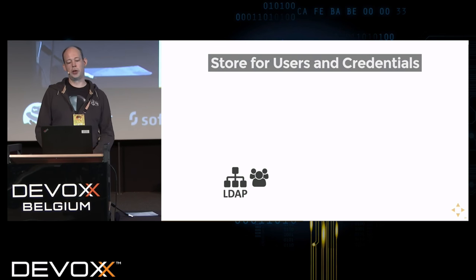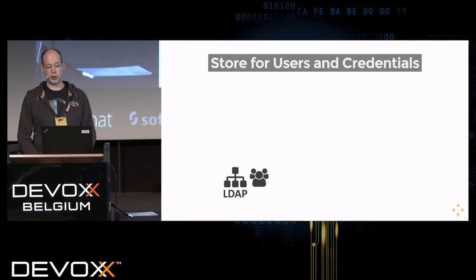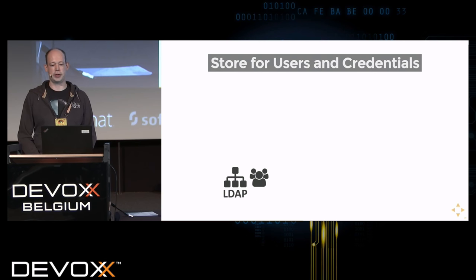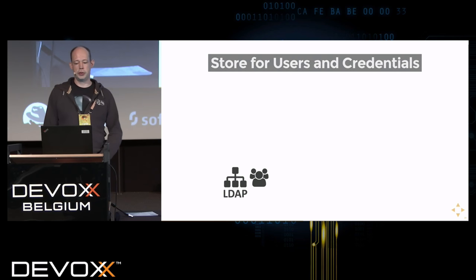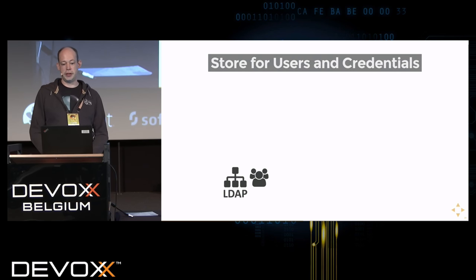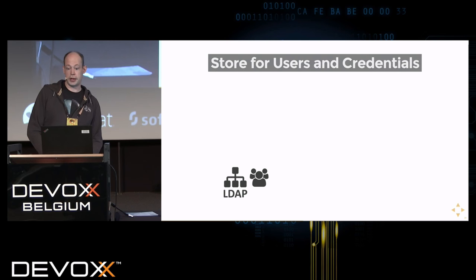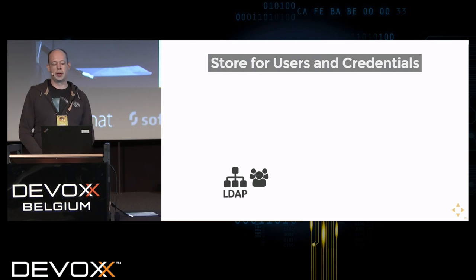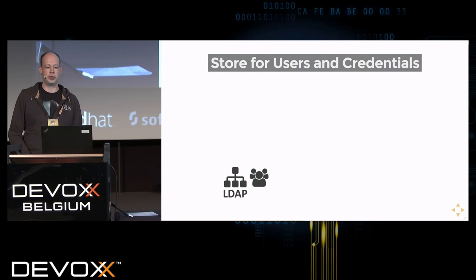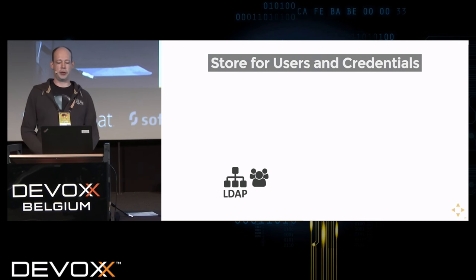The central store holds all user credentials — passwords hashed, never in plain text — and other credentials you want to manage, such as seeds for two-factor authentication devices like time-based one-time passwords, or common names of certificates used to identify users. Whatever fits into this goes into a central distributed store to account for your users and credentials.